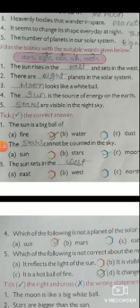Question 3: Moon looks like a white ball. Question 4: The sun is the source of energy on the earth. Question 5: Stars are visible in the night sky.